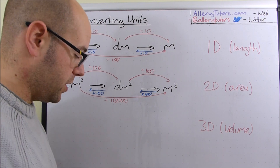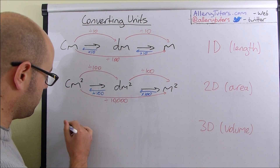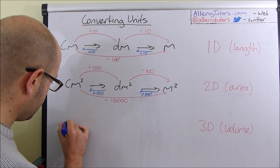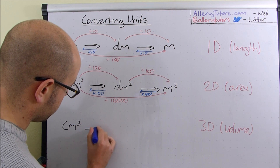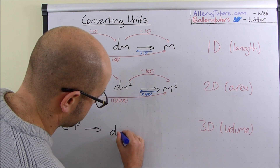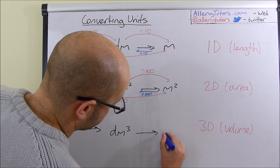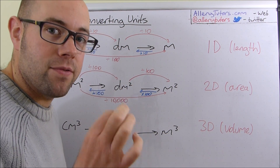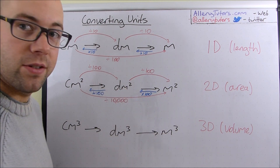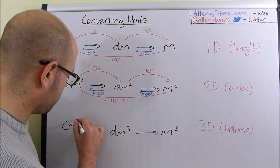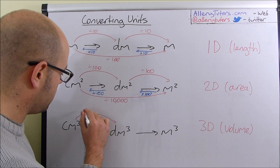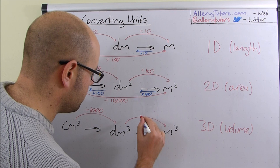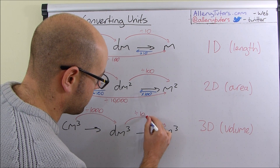The most important thing now is volume — this is what we're using in chemistry quite a lot. Volumes are in cubed this time, so we've got three dimensions: centimetres cubed, decimetres cubed, metres cubed. For every dimension, we have to add another zero. So going from centimetres cubed to decimetres cubed, we now divide by 1,000. Going from decimetres cubed to metres cubed, we're also dividing by 1,000 — we're adding an extra zero because we've got an extra dimension.